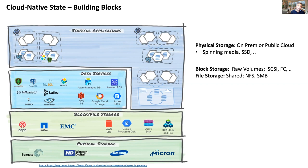Right above physical storage, you have block and file implementations. Block gives you raw volumes — local block storage, with protocols like iSCSI and Fibre Channel. Amazon's AWS Elastic Block Store (EBS) is an implementation of this. File storage, on the other hand, is typically shared, using protocols like NFS and SMB. On AWS, that's the EFS or Elastic File Store. Of course, there are many more implementations from various vendors, each with their pros and cons.